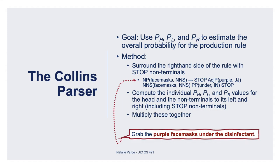The goal of the Collins parser is to use those three probabilities to estimate the overall probability for the production rule. It achieves that goal by surrounding the right-hand side of the rule with stop non-terminals to indicate where to begin and end, generating constituents for this rule, computing the individual P sub H, P sub L, and P sub R values for the head and each non-terminal in the rule including the new stop non-terminals, and then multiplying those probabilities together.